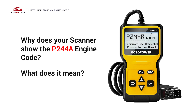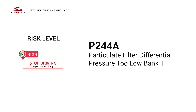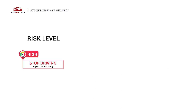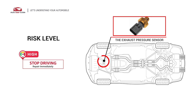Why does your scanner show the P244A engine code? What does it mean? P244A is a diagnostic trouble code for particulate filter differential pressure too low, bank 1. It is a generic powertrain code related to the Auxiliary Emission Control System. Specifically, it indicates that the diesel particulate filter differential pressure is too low on bank 1.